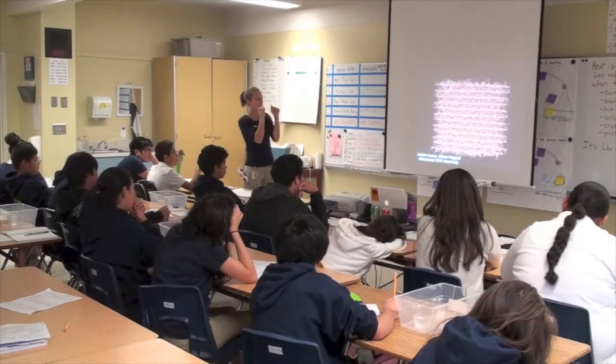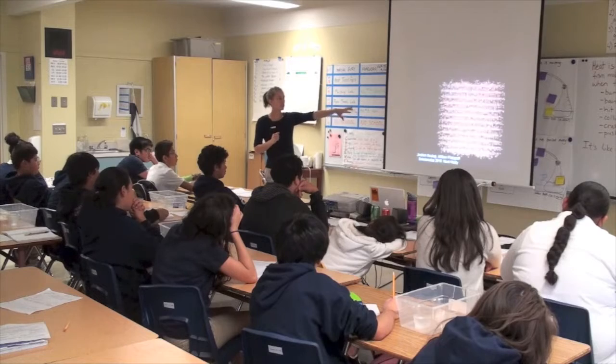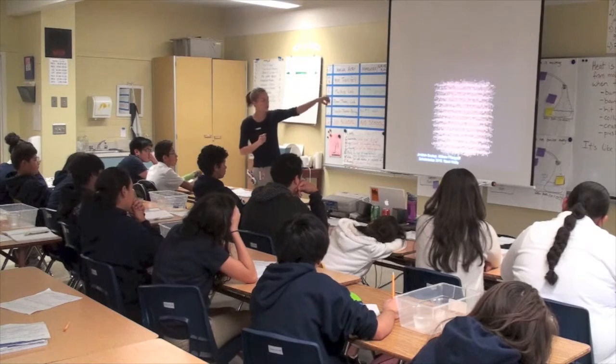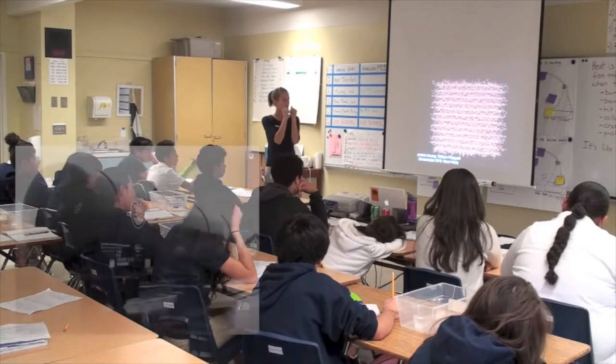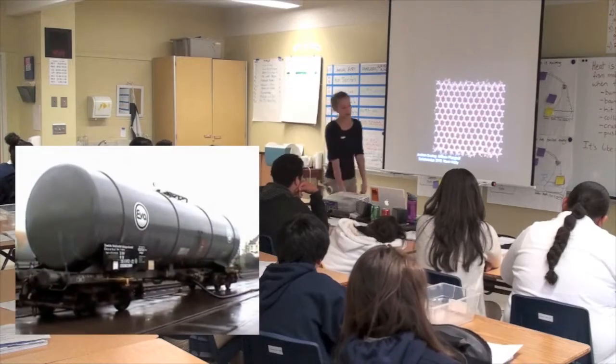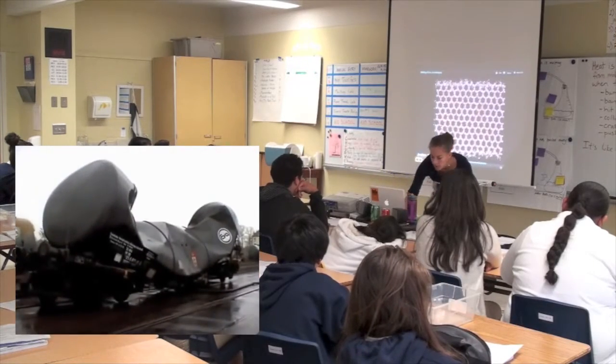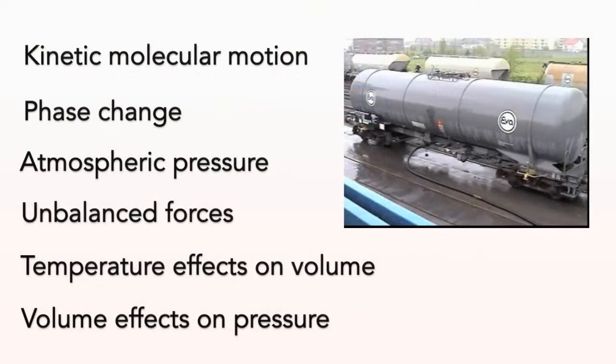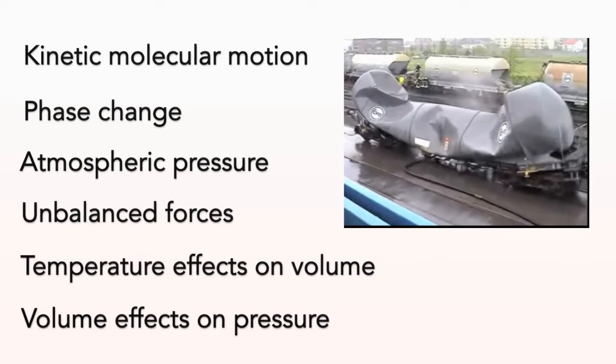In a middle school classroom, a unit about how gases behave is anchored in the question of what would cause a railroad tanker car to do this. Over three weeks, students engage with a number of science ideas and investigations to generate and revise explanations for this phenomenon.